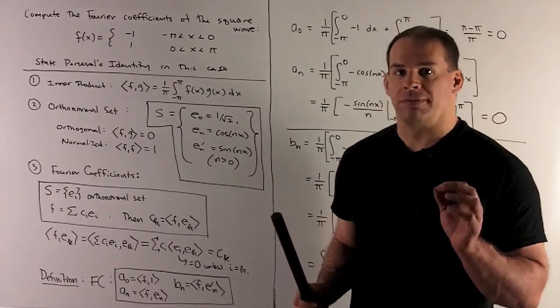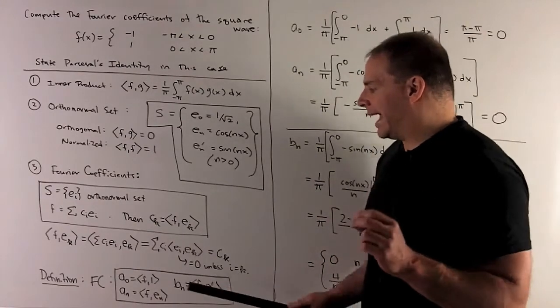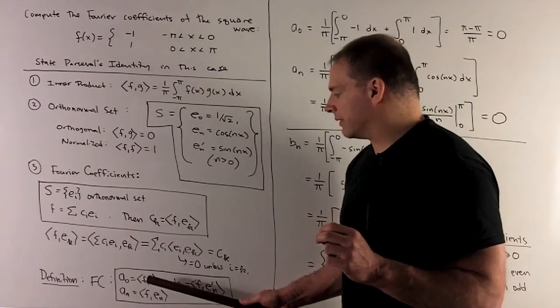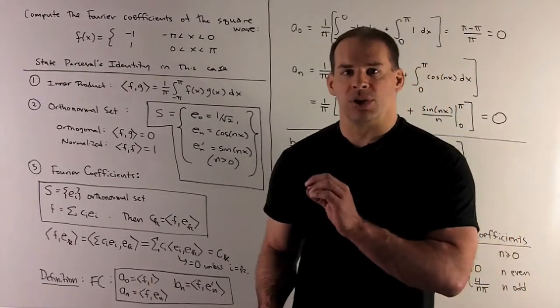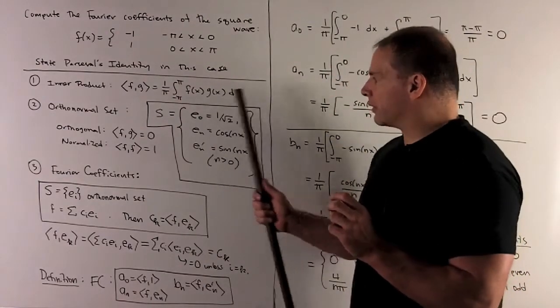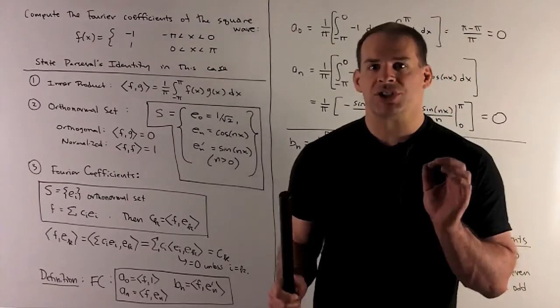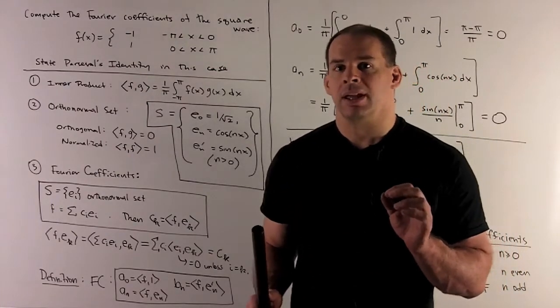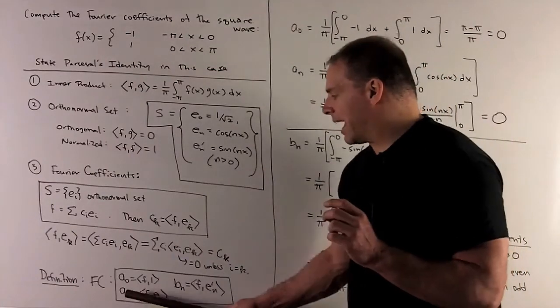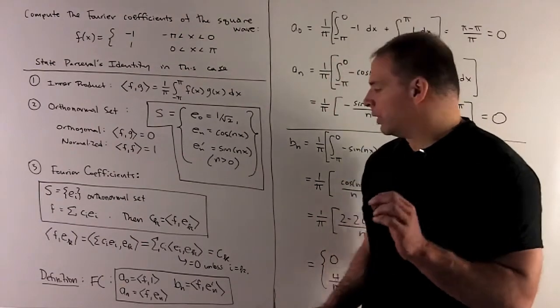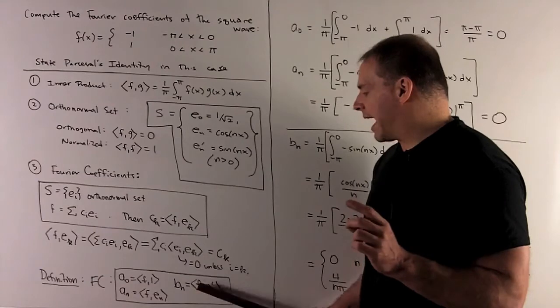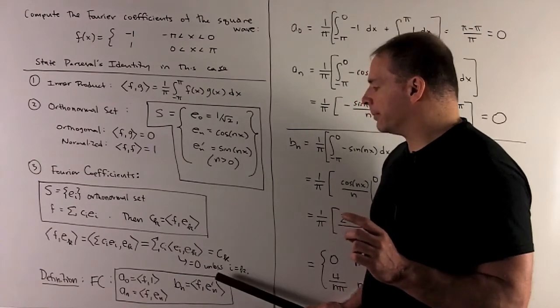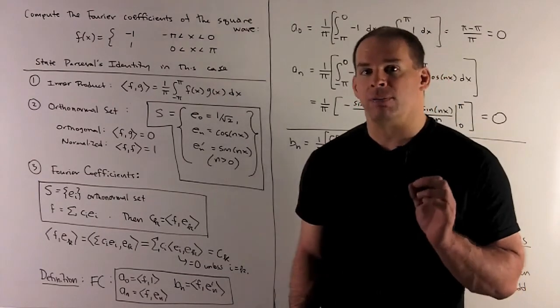So we take as a definition, Fourier coefficients for a function f. a zero is just going to be the inner product of f with the function one. So here we're not using our vector from the orthonormal set. Tradition says you use one. Then, for a sub n with n bigger than zero, we're just going to take f against e sub n. For b sub n, we're going to take f against e sub n prime. So that's our definition of Fourier coefficients.